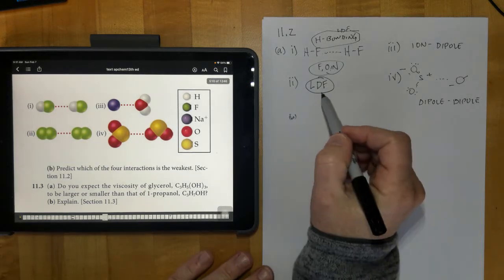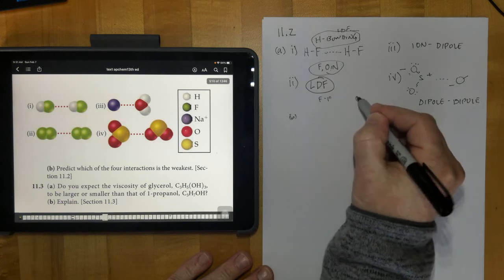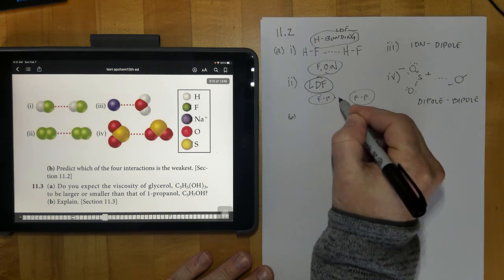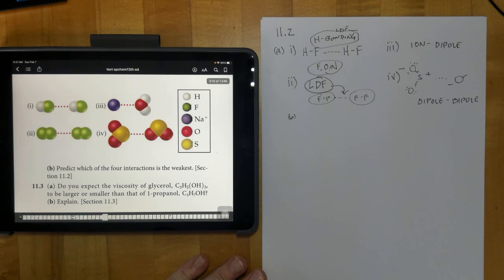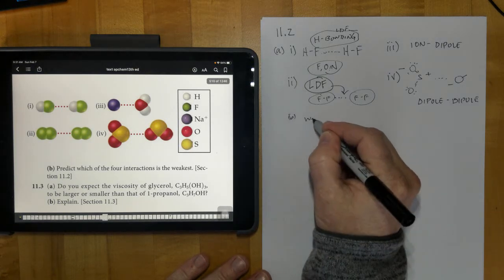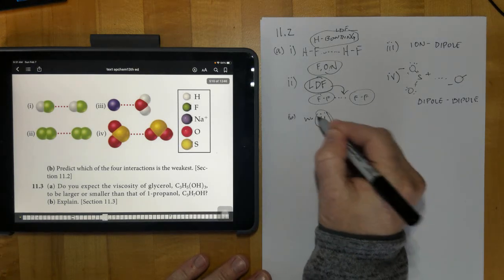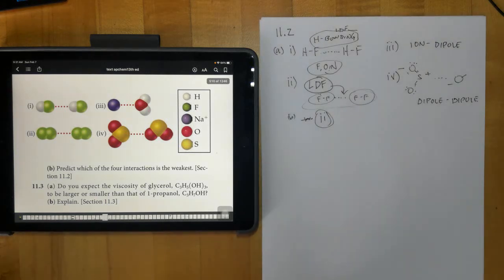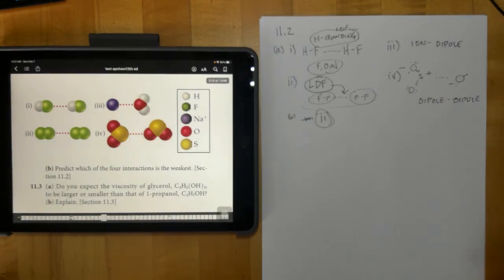Well, since there's not a lot of electrons in the fluorine to fluorine right here, this London dispersion force is going to be the weakest. So number two would be the weakest force, because remember, those are always present in everything and they're the weakest, unless you have lots and lots of electrons.